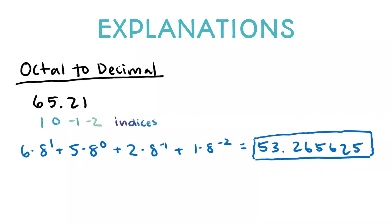Let's try to convert from octal to decimal — same method. We have the number 65.21 in octal. What we do is label our indices and multiply everything. For example, you take the 6 and multiply it by 8 to the power of 1, because 1 is the index and 8 is the radix. You keep going until you find your answer.